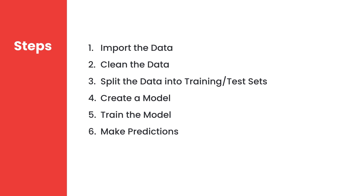Our model will make a prediction. When you start out, it's very likely that your predictions are inaccurate. So we need to evaluate the predictions and measure their accuracy. Then we need to get back to our model and either select a different algorithm that produces a more accurate result, or fine-tune the parameters. Each algorithm has parameters we can modify to optimize accuracy. These are the high-level steps you follow in a machine learning project.